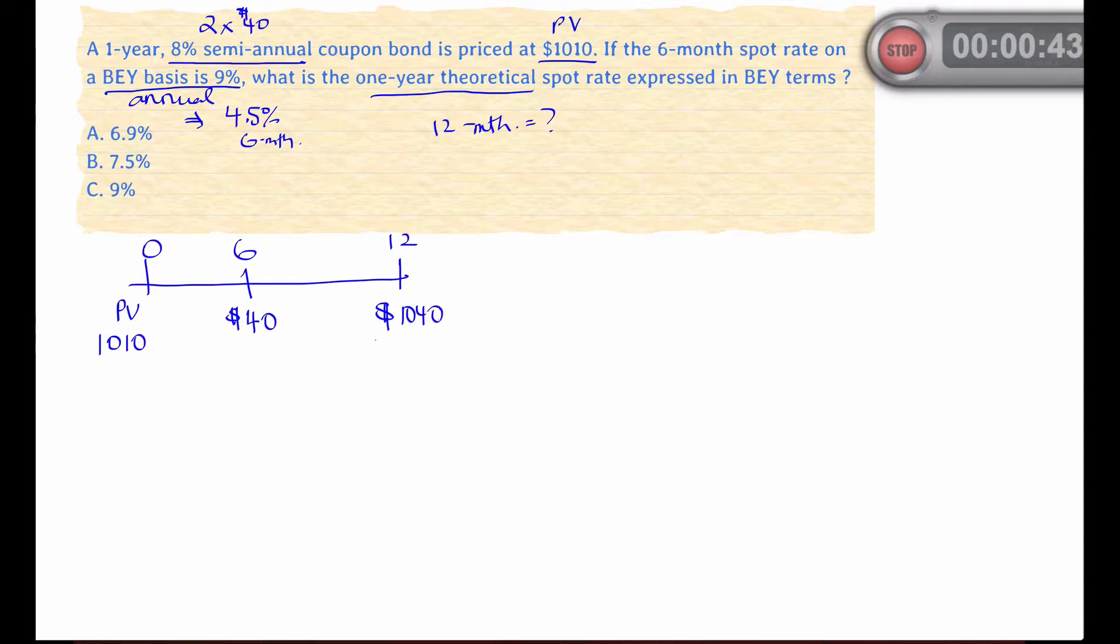The first payment is discounted over one period and the second over two periods. So we write out the equation: present value is the first payment discounted at the given rate, and what we're being asked is what is the discount rate of the second payment if the price of the bond is the present value, which is $1010.